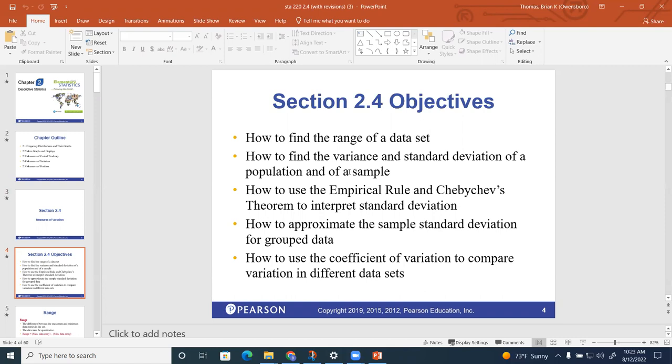So remember, mu (μ) is the symbol they use for population involving the mean, and x-bar was the symbol we used for when we were dealing with the sample. So let's see what we got here.